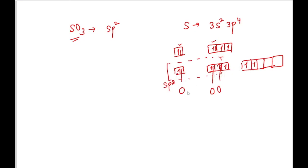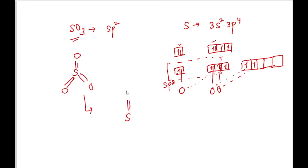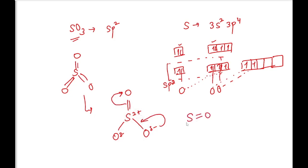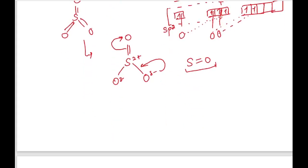Sulfur still has three non-bonding electrons involved in pi bonding with oxygen, so there are three pi bonds in SO3. Due to electronegativity difference, the sulfur atom carries a +2 charge and two oxygen atoms carry negative charges. These electrons are always involved in delocalization, resulting in three double bonds, and all pi electrons are delocalized — that is why all S=O bond lengths are equal.